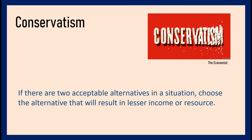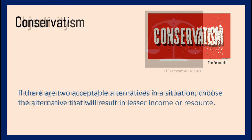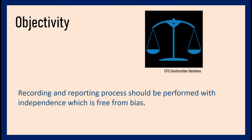We also have Conservatism. If there are two acceptable alternatives in a situation, the accountant chooses the more conservative option — the one where we are at a disadvantage. We don't choose the option that makes our financial statements look too glamorous. We go with the conservative side, choosing the alternative that does not make the financial statements overly favorable.